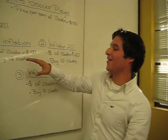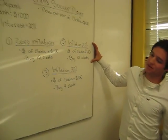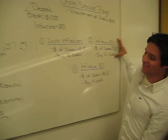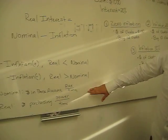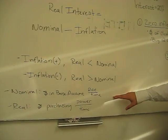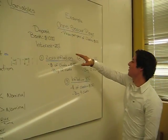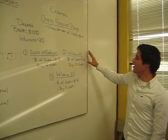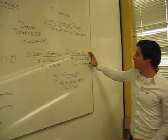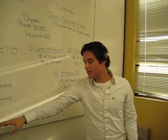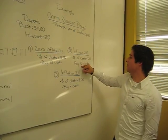And then, with a 20% interest rate and inflation, his money in the bank is still the same, which is $1,200. But since over time, inflation has gone up, this has decreased his purchasing power to 10 cleats.